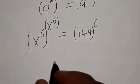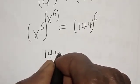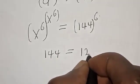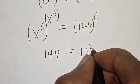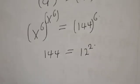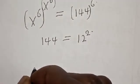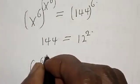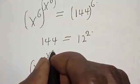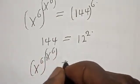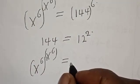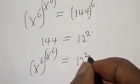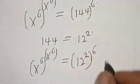Now remember that 144 equals 12 squared. So s raised to power of s raised to power of s raised to power of s raised to power of 6 is equal to 12 squared, raised to power of 6.